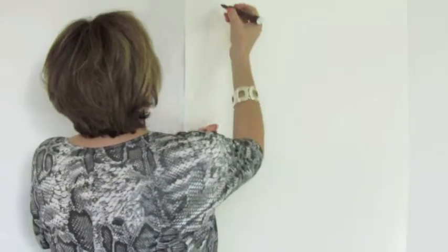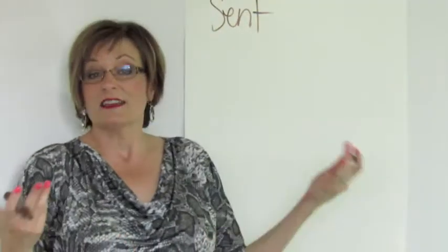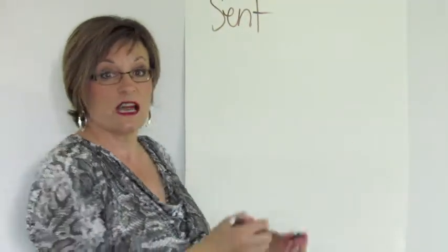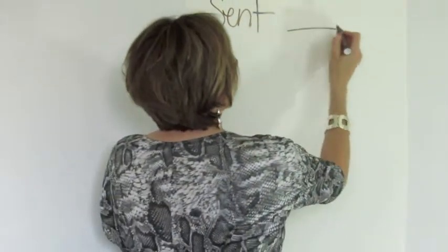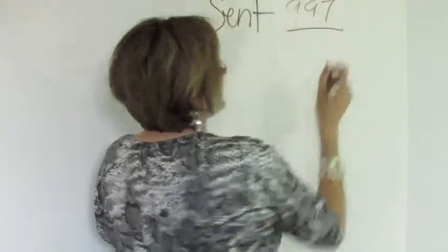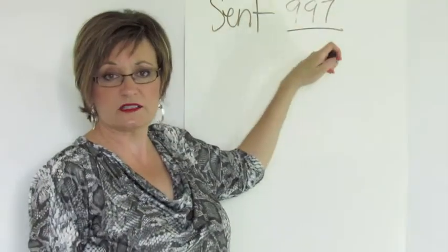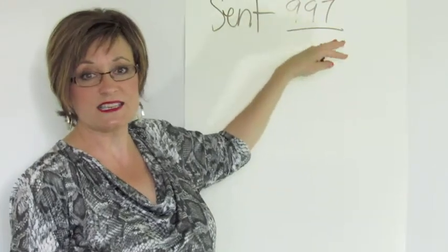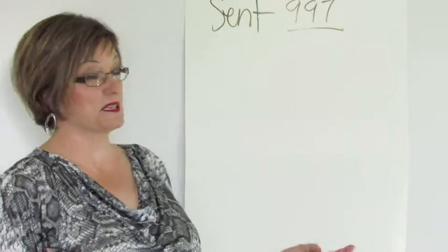The first thing that you'll get is how many emails you sent, and that's useful. A feature that I love about Constant Contact is that you get the number. So let's say you sent out 997, and it will be underlined and in blue. What that means is you can click on that number and see exactly who received the email.